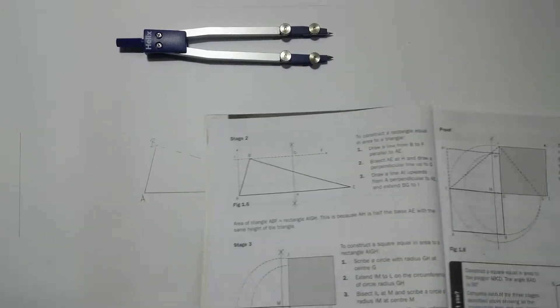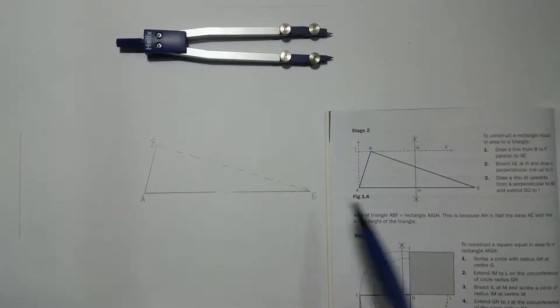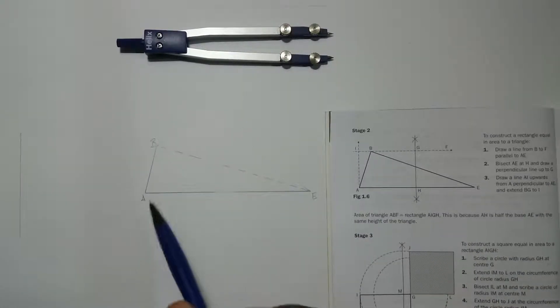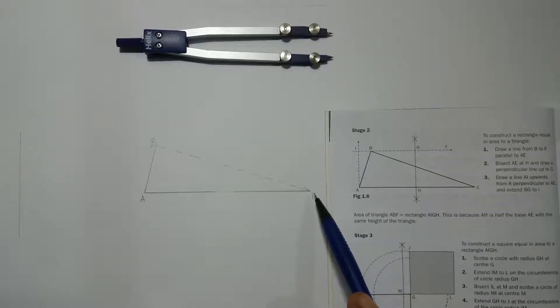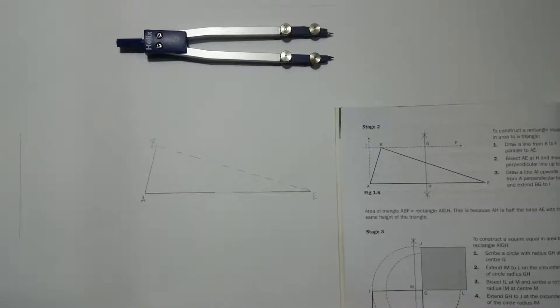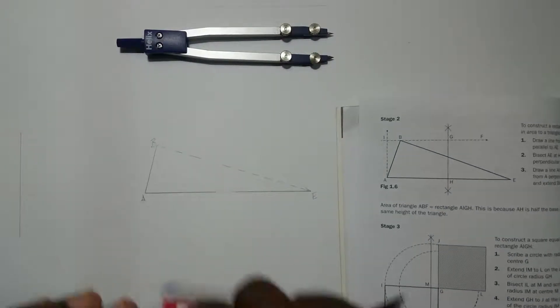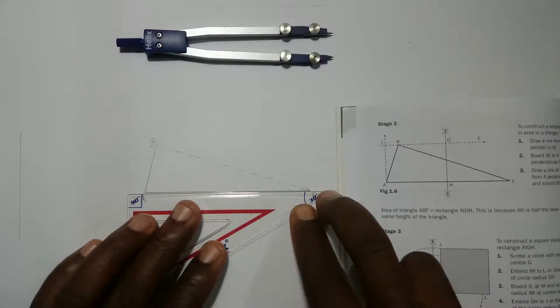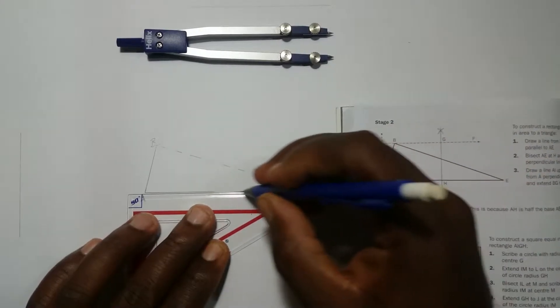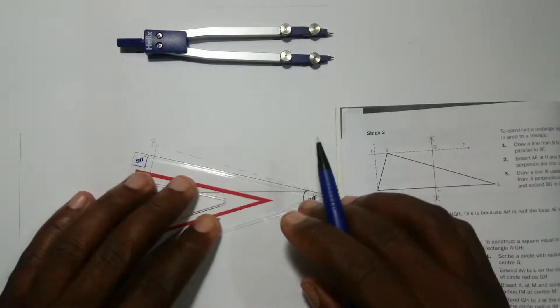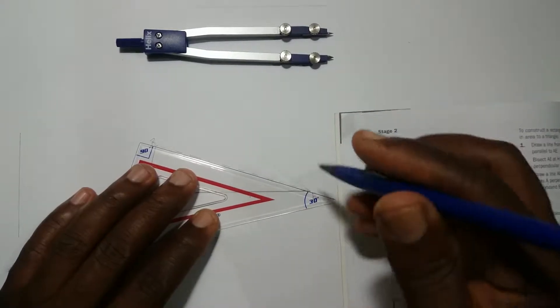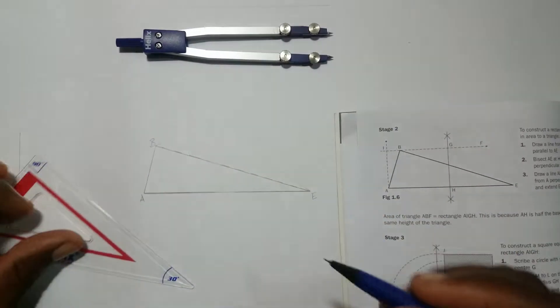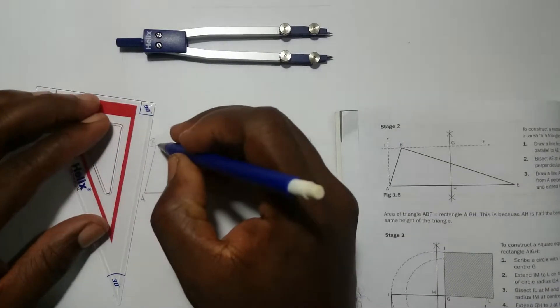We're gonna take the triangle ABE. So what I've done, I've erased everything else and left ABE as you can see here. You erase everything else and you leave ABE, and you can darken this dash line also.